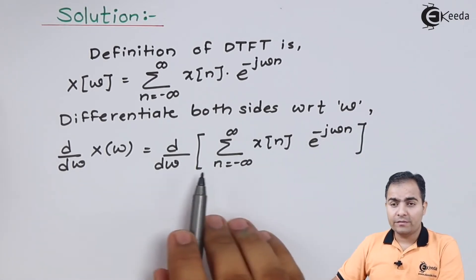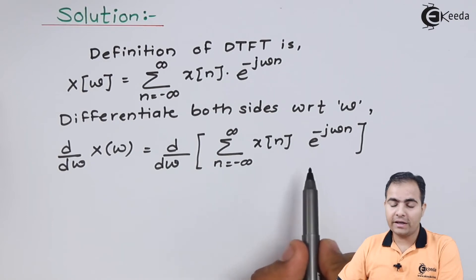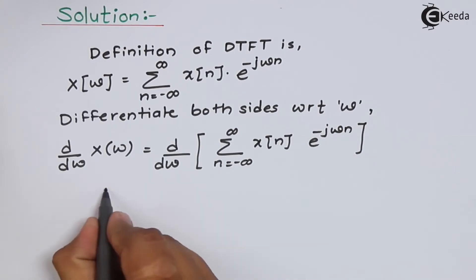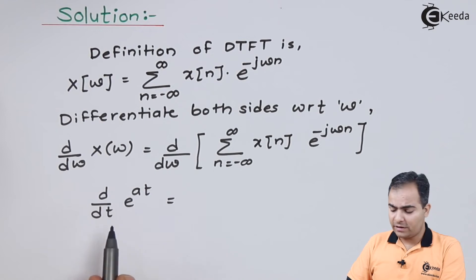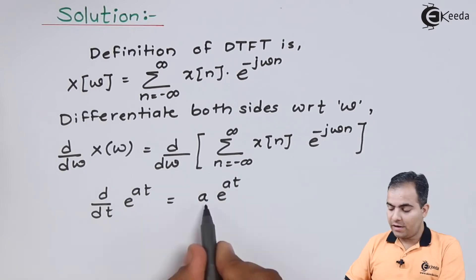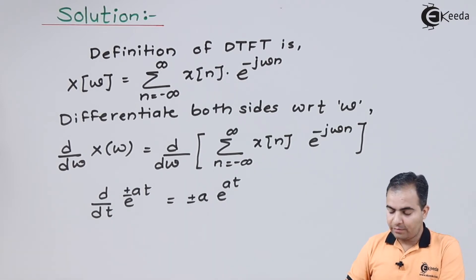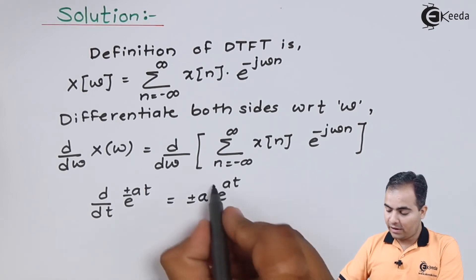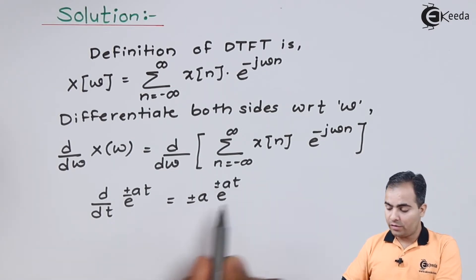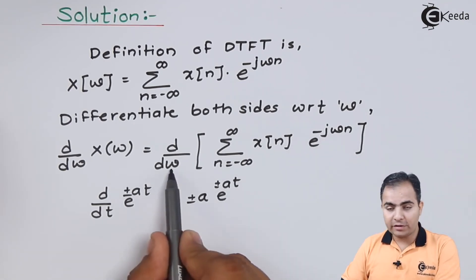Looking at the right-hand side, the term we differentiate with respect to omega is the exponential function. We have studied the differentiation of the exponential function: d by dt of e to the power at equals a times e to the power at. If there is a plus or minus sign in front of a, we multiply by plus or minus a and keep the same power in the exponential term. We apply this rule here — differentiating e to the power minus j omega n with respect to omega.